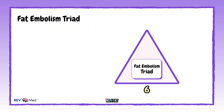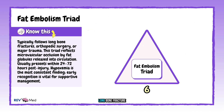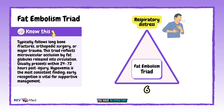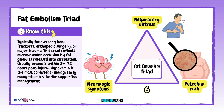Number six: fat embolism triad. Typically after a long bone fracture, you have respiratory distress, neurological symptoms, and petechial rash. It usually shows up within a couple of days after injury.